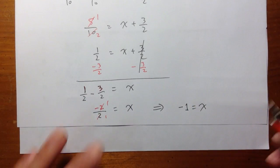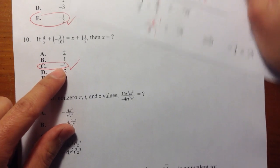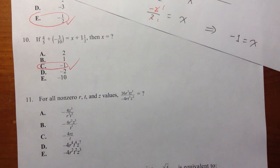So negative 1 is equal to x. x is equal to negative 1. And I will show you guys the third way in the next video.